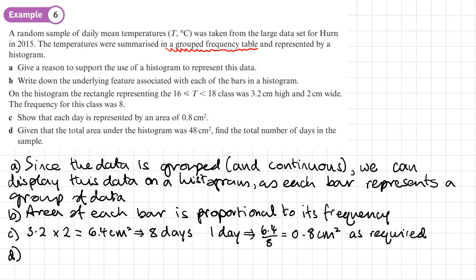So what we need to do here is to take the total area, which is 48, divide it by how much area is required for each day, and that will tell us the number of days. So 48 divided by 0.8 is 60. So the total number of days in the sample was 60 days.